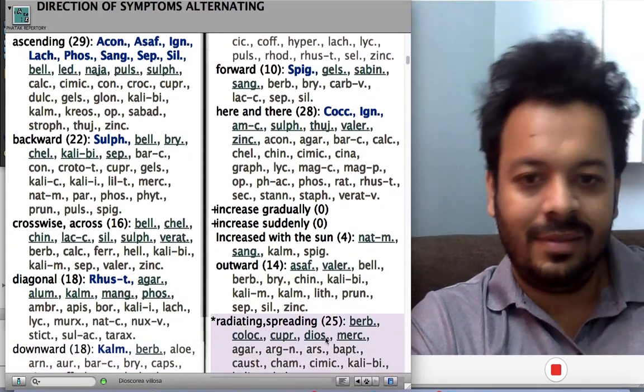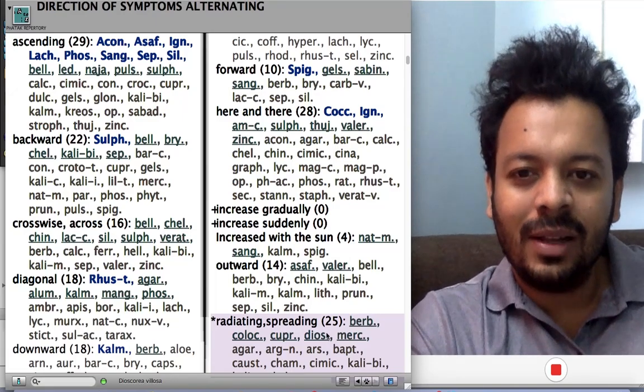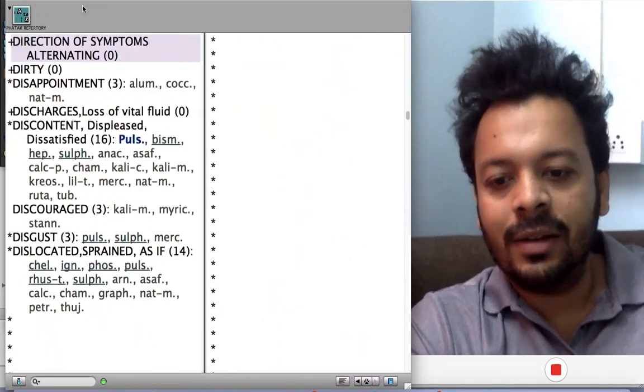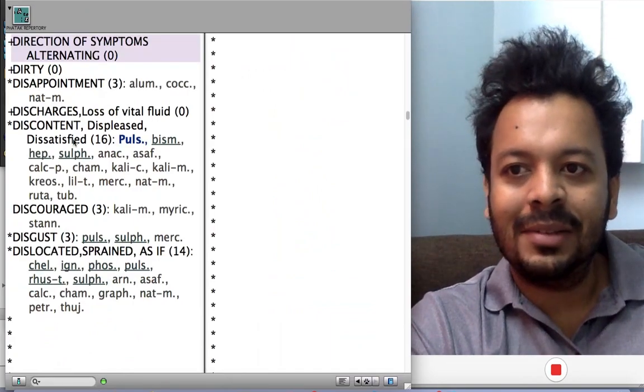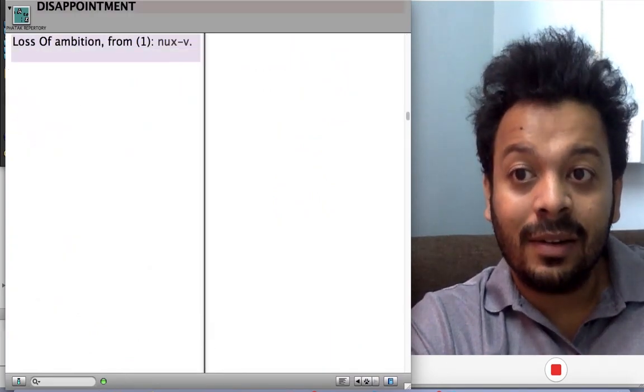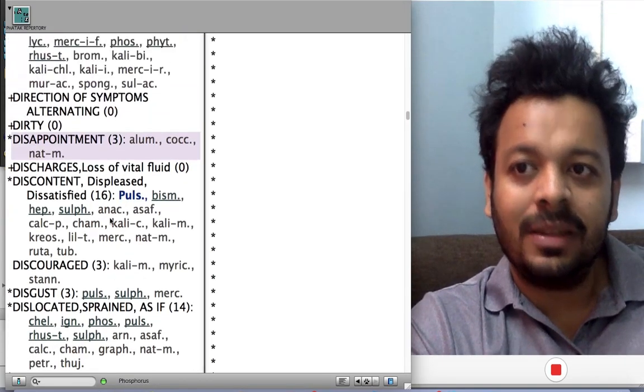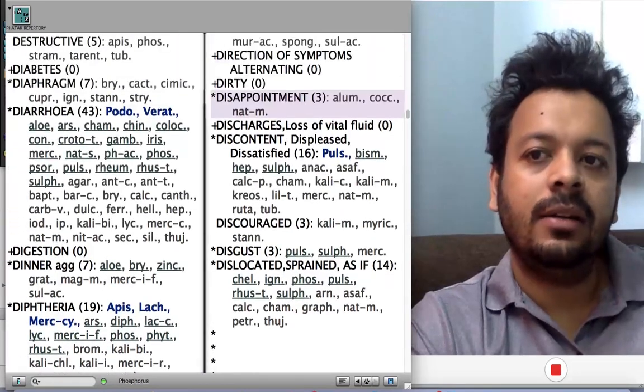Radiating spreading pain: Dioscorea. Like that, many interesting rubrics that you will find in this repertory. If you know that really well, you will be able to really master the repertory. There are many more rubrics in that direction.